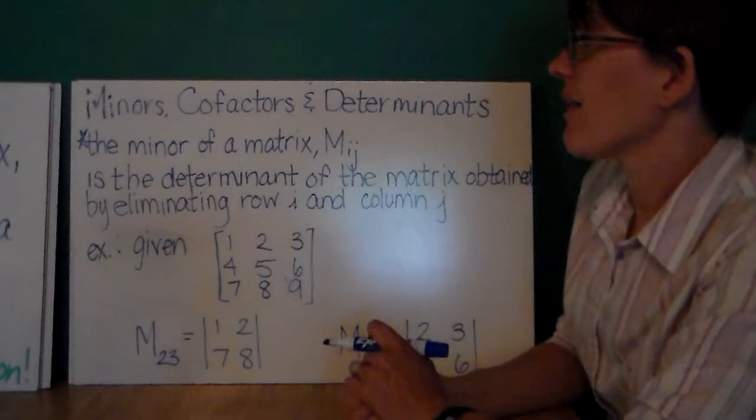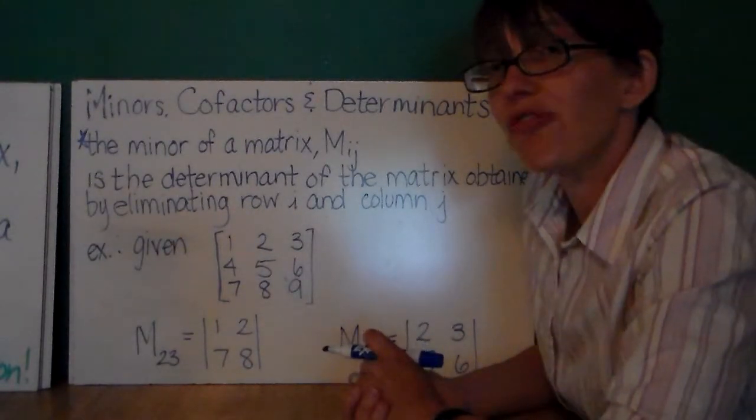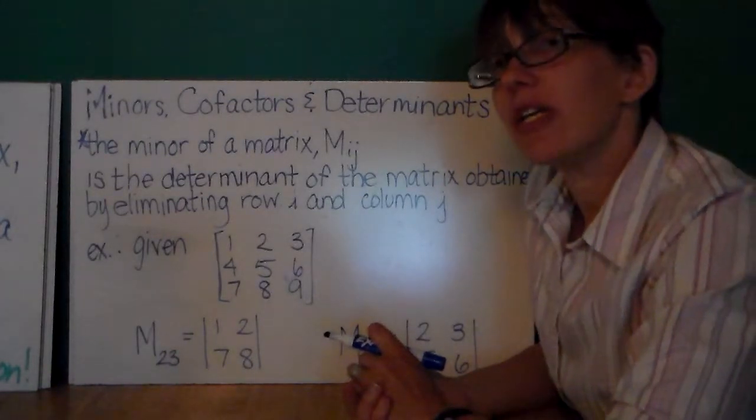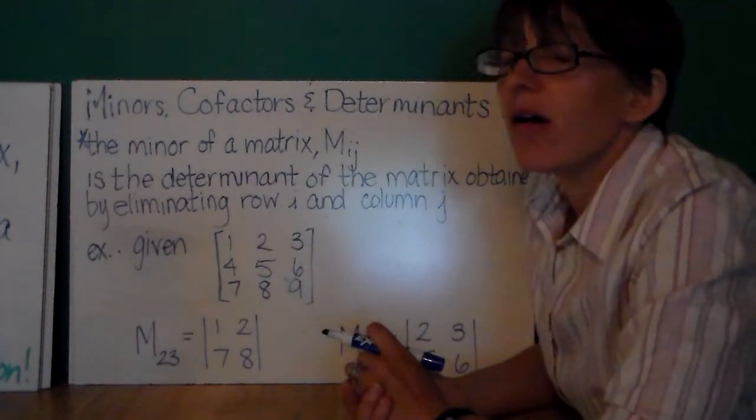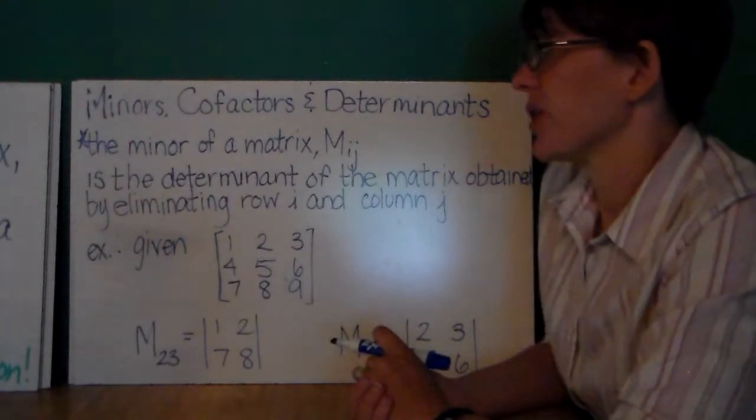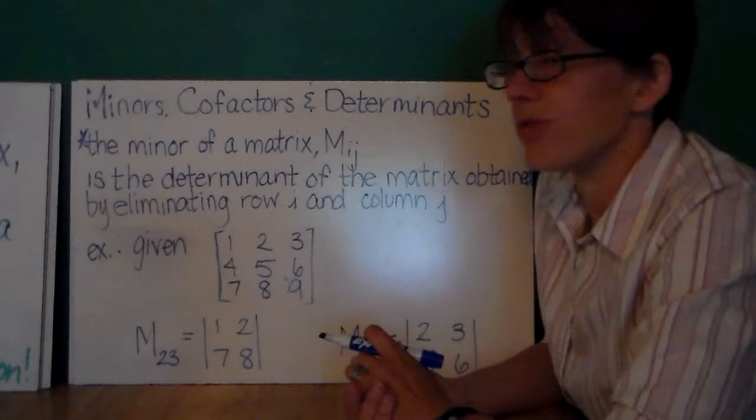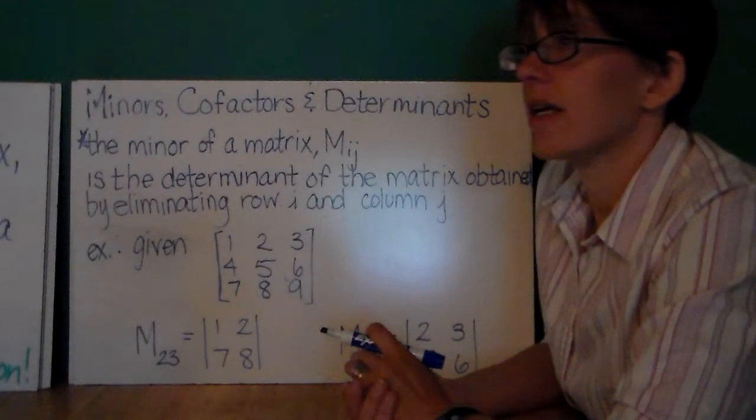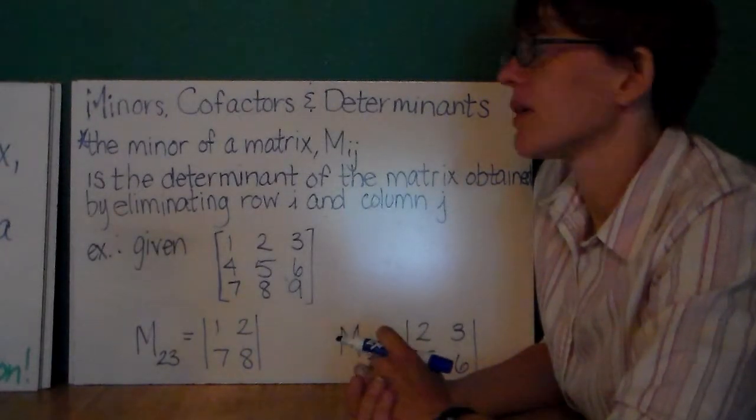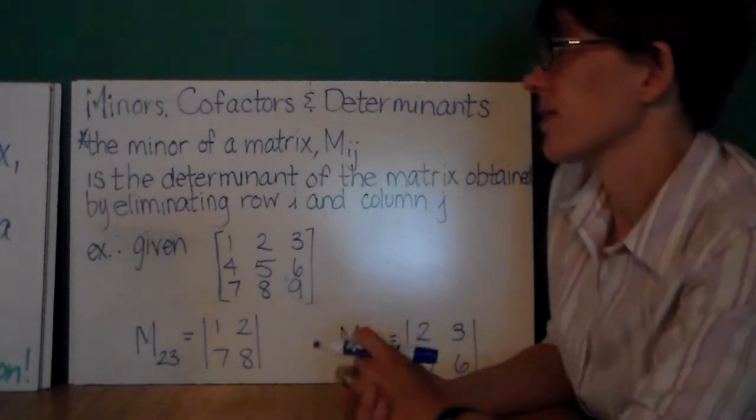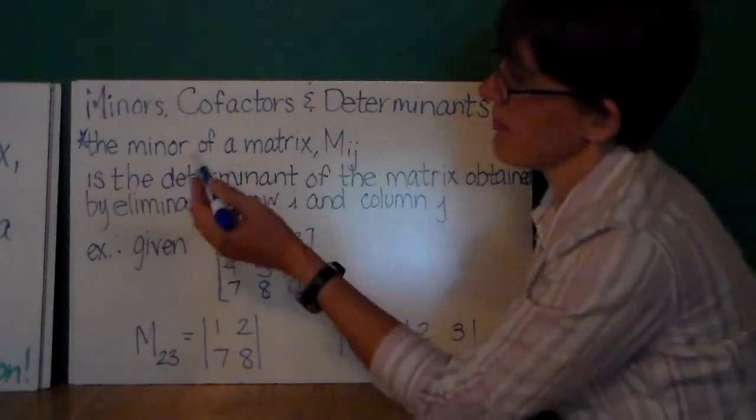But we have minors and cofactors that we use in finding determinants of a square matrix larger than 2x2. So, I don't think it's terribly useful to use them for the matrices that are just 2x2 in size. I think they're too tiny to need this.